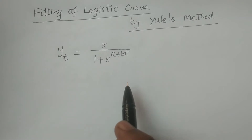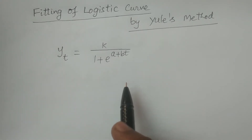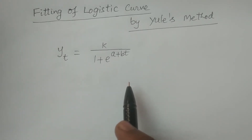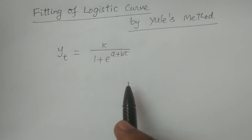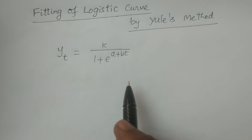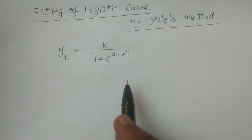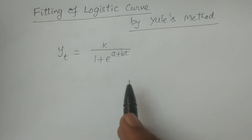So, while taking the principle of least squares method, we can calculate that the parameters can be estimated by the principle of least squares method. This is the usual procedure given by Yule.